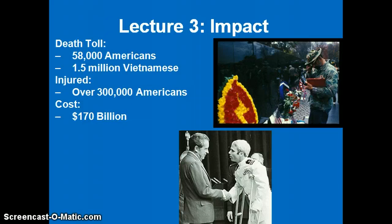58,000 Americans lost their lives in this war, maybe closer to 2 million Vietnamese. The war was devastating to both populations, especially the Vietnamese, as much of their geography and land was drastically disrupted from the ongoing bombing campaigns. Over nine times the amount of bombs were dropped on Vietnam by the U.S. military than were dropped on the whole Pacific theater in World War II. Over 300,000 Americans were injured in this war, with various different types of injuries.